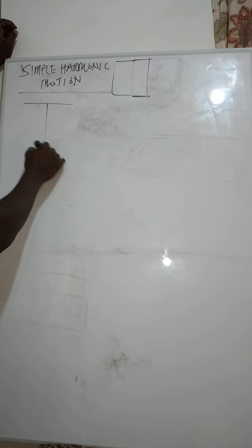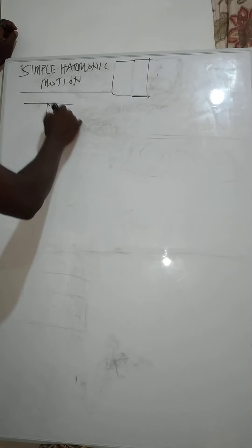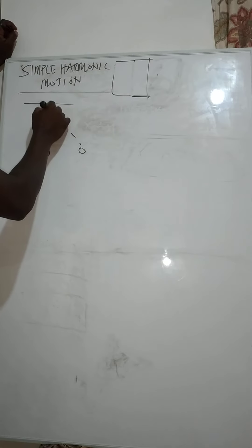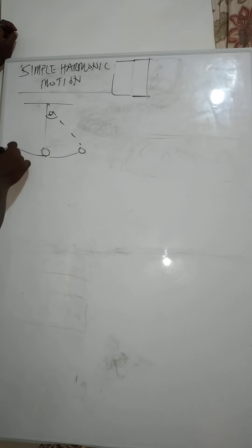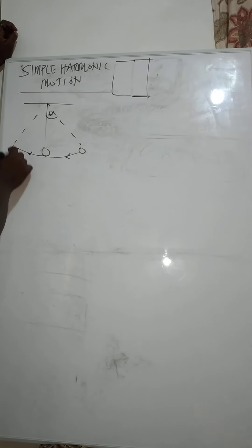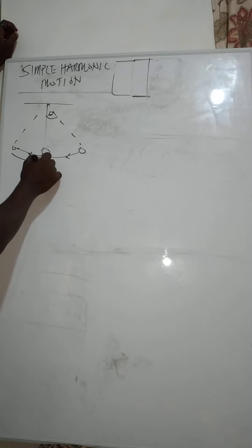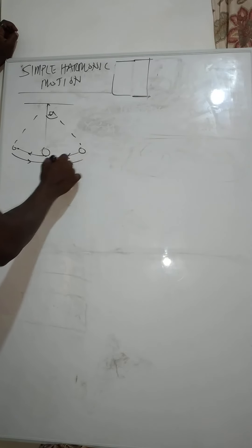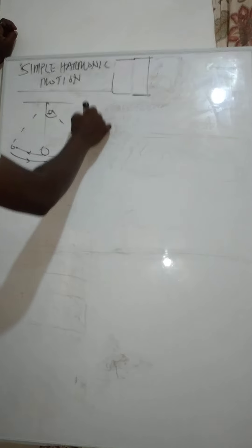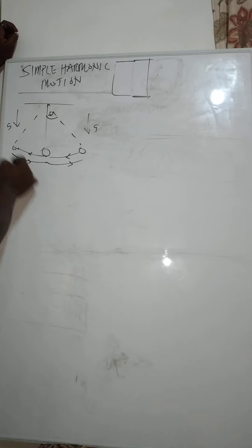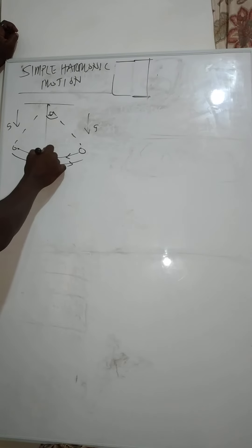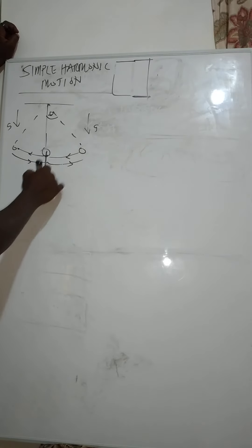I'm going to use a simple pendulum as an example. If you displace a simple pendulum to a certain angle theta and release it, the pendulum comes back to its original point before it moves to another point on the other side. It continues moving back and forth, and because of gravity at each side, gravity slows down the motion.